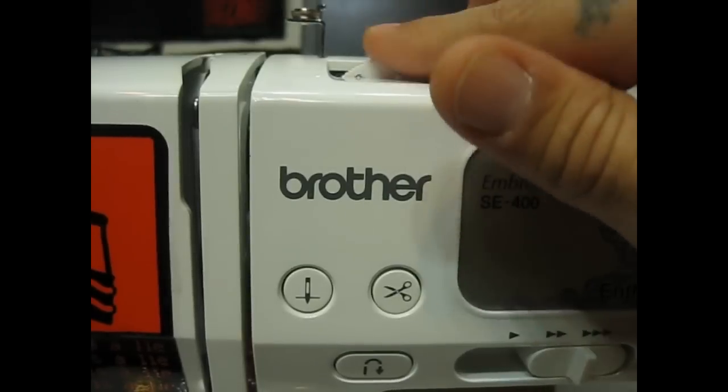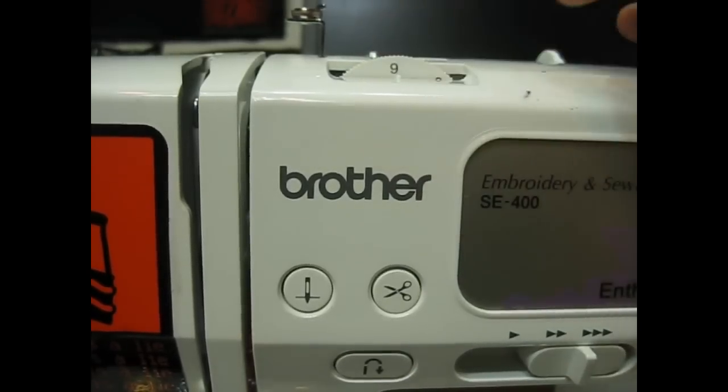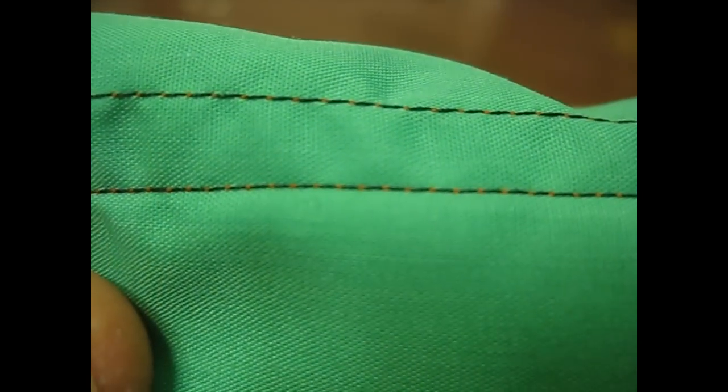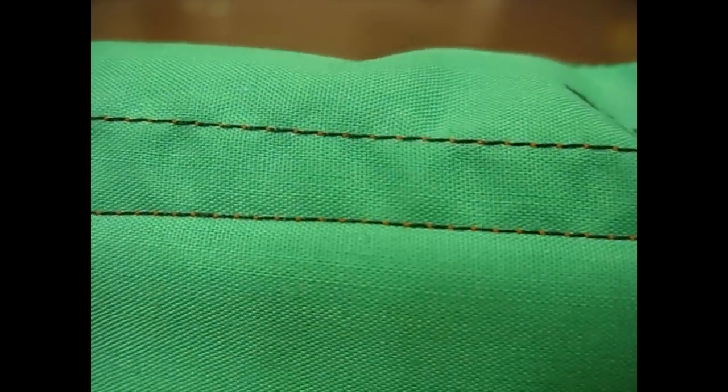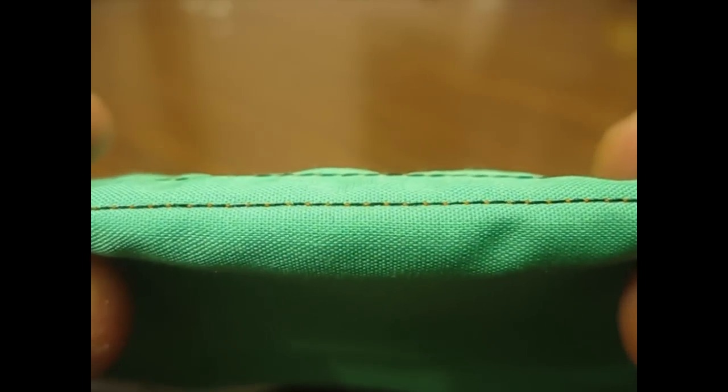But now what we're going to do is we're going to go ahead and just crank it all the way up to nine. This is what I was just talking about. Now we've just got basically a line of thread running across the top there. I know it's kind of hard to see, but it's the exact opposite of what was happening when we set it at zero. So we don't have enough draw coming from the bobbin.